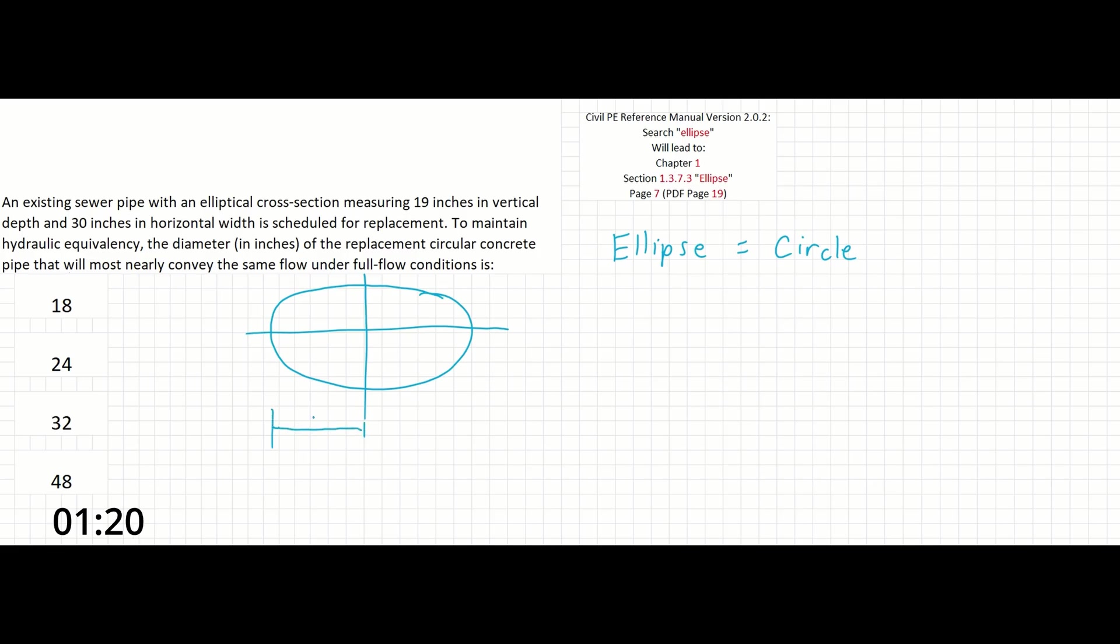The only thing to note is that terms a and b refer to the semi-major and semi-minor axes rather than their full lengths. So in this case, a is going to be equal to half of the width and b is going to be equal to half of the height.